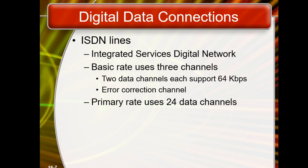ISDN — Integrated Services Digital Network. The basic rate uses three channels: two data channels each supporting 64 kbps, and one error correction channel. ISDN is a digital network. It is a set of communication standards for simultaneous digital transmission of data, voice, and video. Data, voice, and video are all sent over a network using ISDN network services.